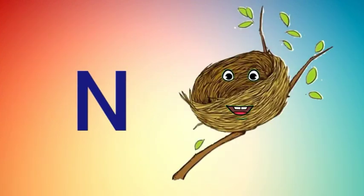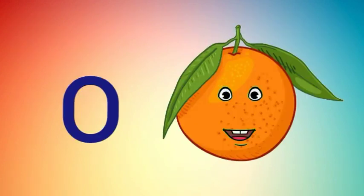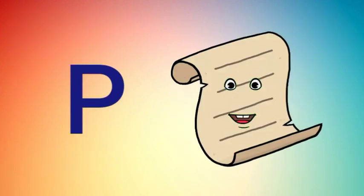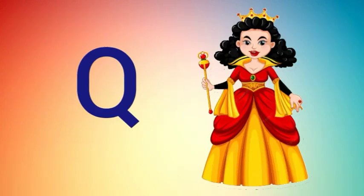N for nest. O for orange. P for paper. Q for queen.